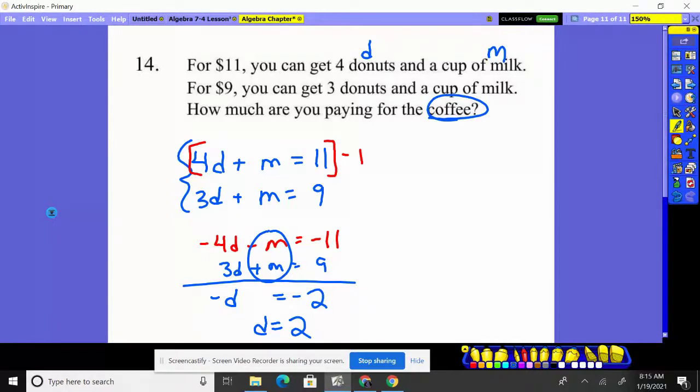It doesn't want to know donuts. It wants to know the cost of milk, not coffee, milk. So I substitute in. Three times the donut price, which is $2, plus one milk gives you 9.